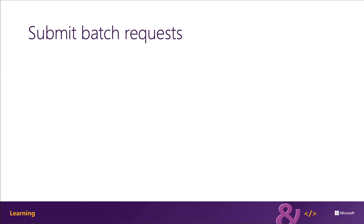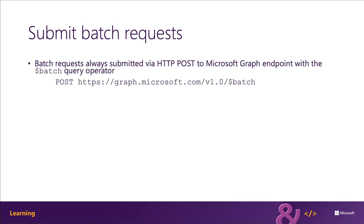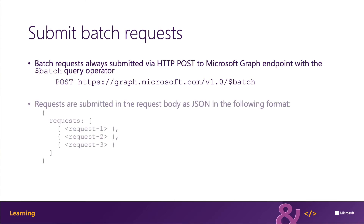All batch requests must be submitted as an HTTP POST to the graph.microsoft.com/v1 endpoint and include the batch query operator. The requests in a batch are submitted within a JSON collection of requests within the batch request body.